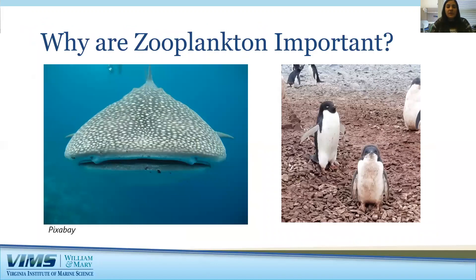One reason why zooplankton are important is that they play a vital role in the aquatic food web. Zooplankton graze on phytoplankton, which keeps their populations in check, and in turn zooplankton are eaten by a variety of other animals, from larger zooplankton to fishes to even whales. So every animal that lives in the ocean either directly or indirectly relies on zooplankton for nutrition. Examples include filter-feeding whale sharks on the left-hand side, as well as Adélie penguins, whose major food source is Antarctic krill, a type of zooplankton in the southern ocean.